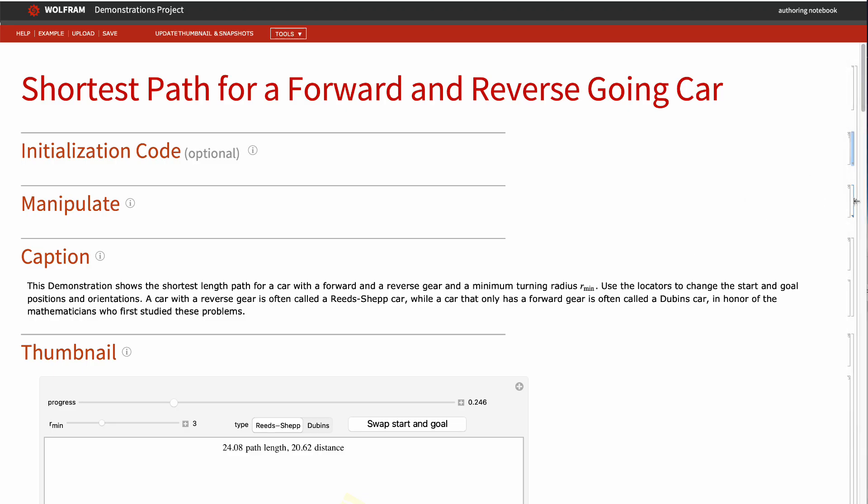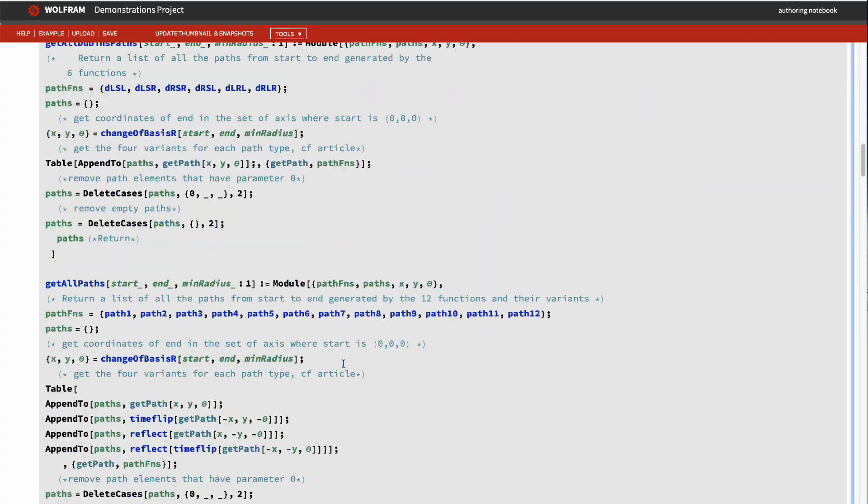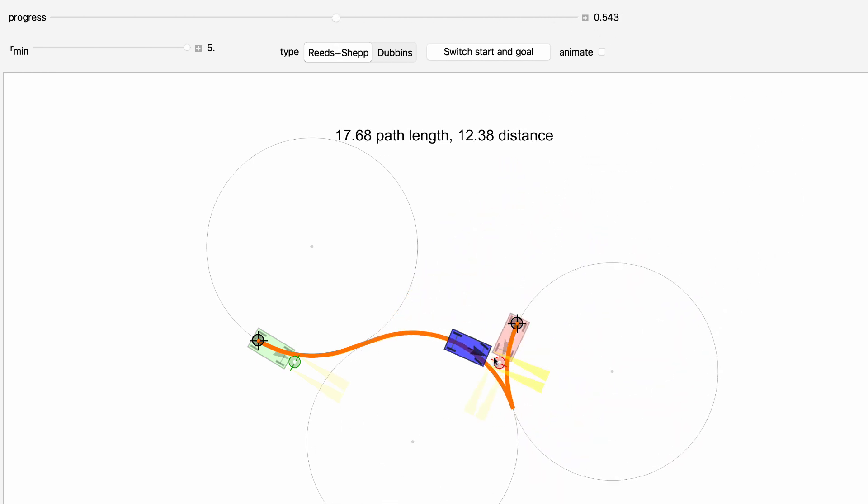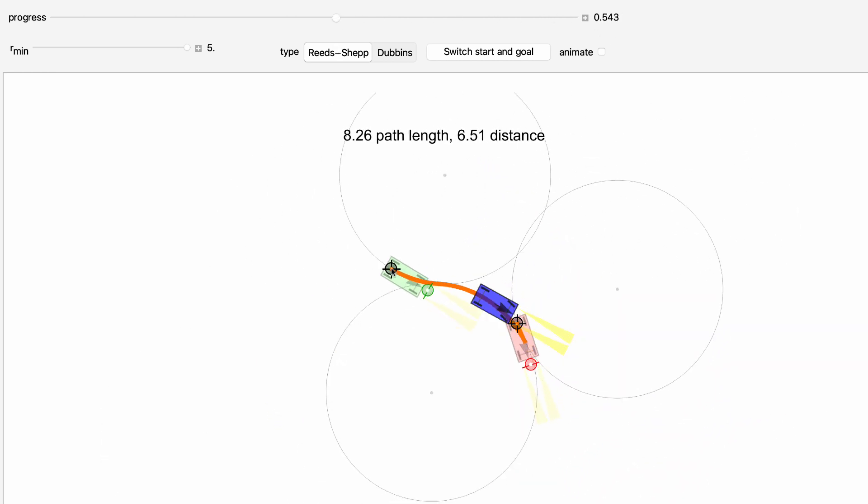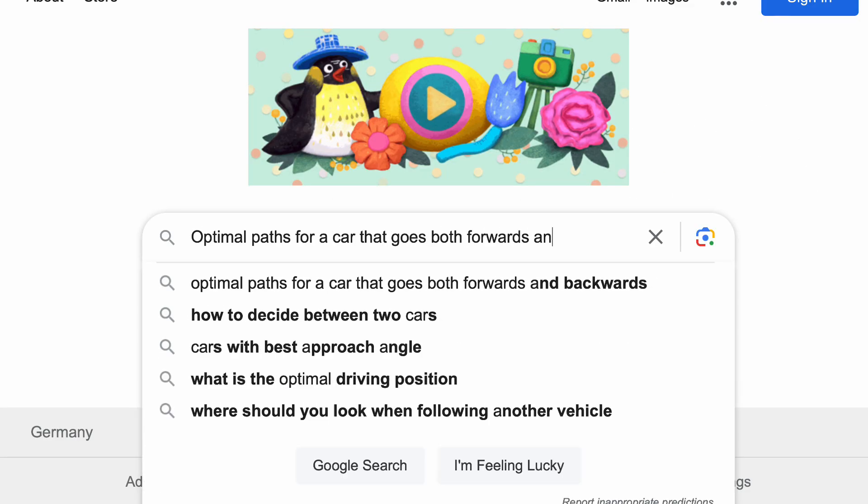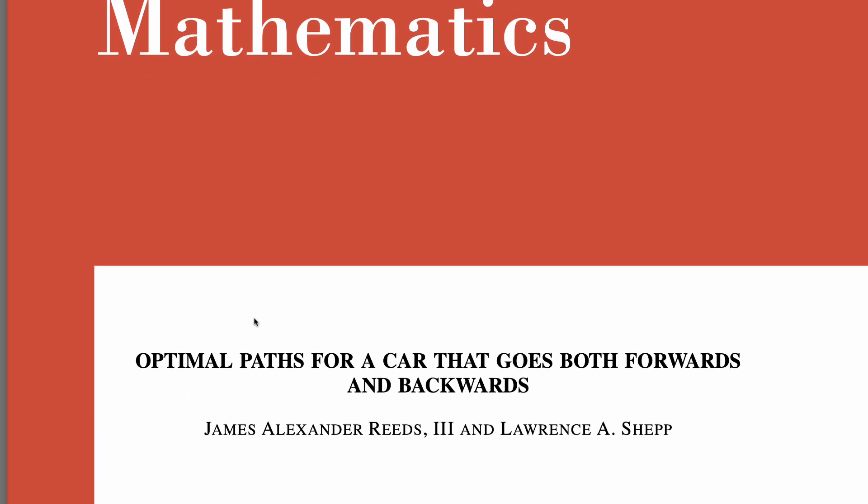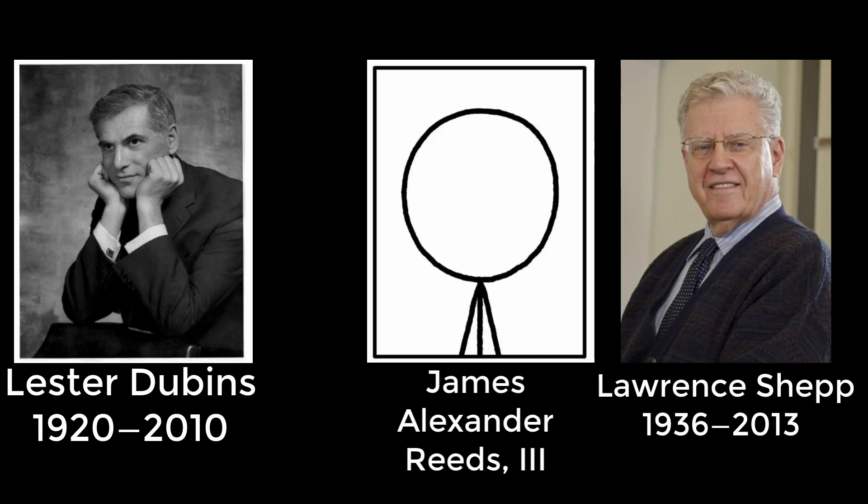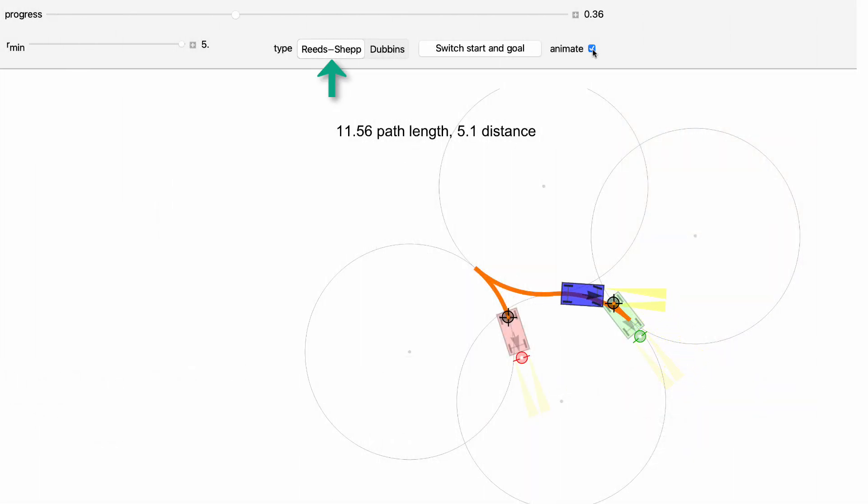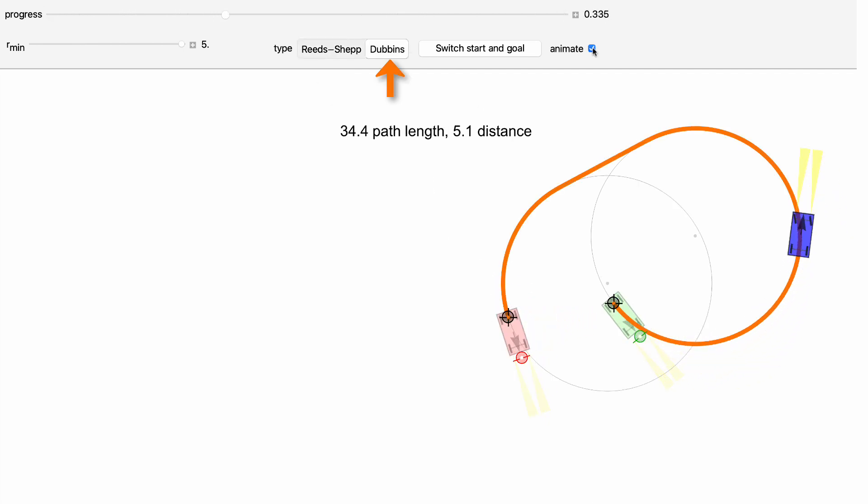I'll show you how to code this later in the video. The progress slider moves the blue car along the route from green to red. Use the locators to change the start and goal positions and orientations. A car with a reverse gear is often called a Reeds-Shep car, while a car that only has a forward gear is often called a Dubin's car, in honor of the mathematicians who first studied these problems. You can see that sometimes the paths are quite different, since the Dubin solutions are a subset of the Reeds-Shep solutions.